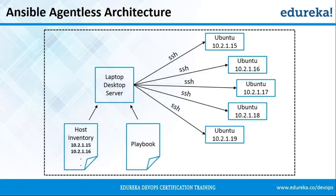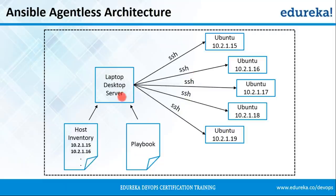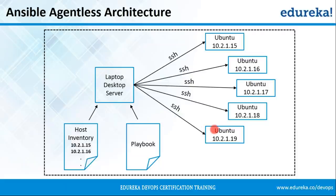Let's take a look at the Ansible agentless architecture. I've got a laptop/desktop server — the main server where Ansible will be installed — and a bunch of node machines, which are Ubuntu machines. There are no agents present. All these node machines are connected to the main server via SSH. In this main server, we've got our host inventory, which is just a list of IP addresses of all my host machines, and we've got our playbook where you write all your configuration scripts. Those configurations get run on the main server and all configuration changes are made on the node machines.